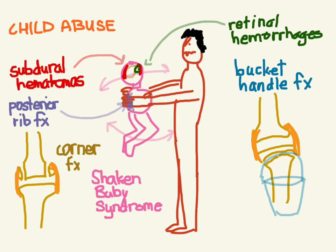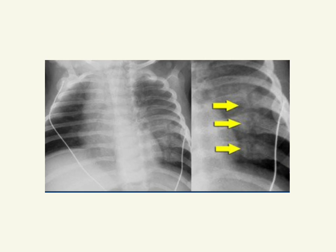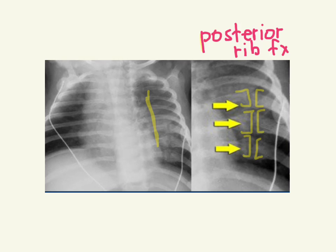Let's look at what some of these look like on x-ray. On this chest x-ray we're looking at the posterior ribs, and you can see the fractures right about there. On the blowup you can see them much more clearly — these can be easily missed if you're not looking for them.